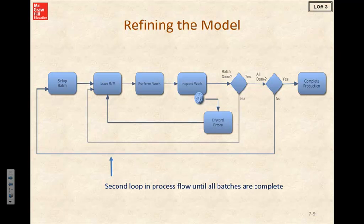This additional step first checks to see if the batch is done, and then checks to see if the batch was the complete order — maybe there were several batches per order. If the order had more than one batch, we say no and loop back to set up the second batch. We keep doing this until the order is complete.